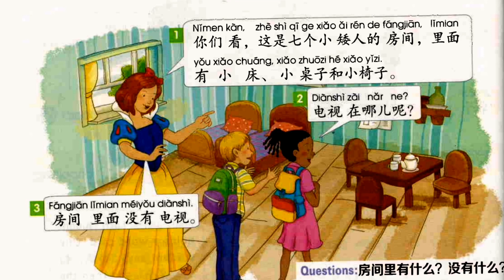你们看,这是七个小矮人的房间,里面有小床、小桌子和小椅子。电视在哪儿呢? 房间里面没有电视。